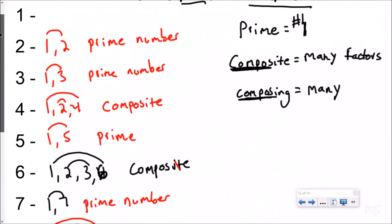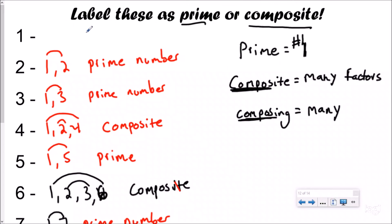Let's go back to one, because this is a special little number. A prime number has exactly two factors. A composite number has three or more, like a composer with many different instruments and many different factors. Well, one only has one factor — one times itself — which is funny because it is neither prime nor composite. It doesn't meet the definition for either one: it doesn't have exactly two factors so it can't be prime, and it doesn't have three or more so it can't be composite. One is a special case, a special number.